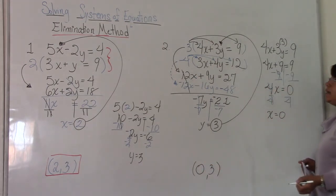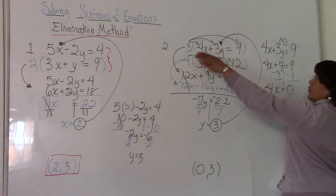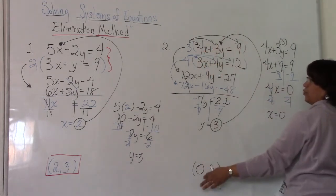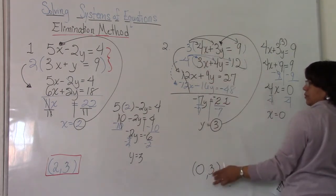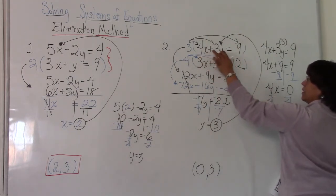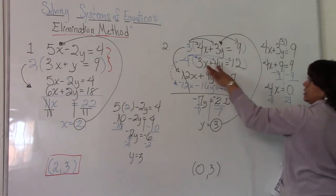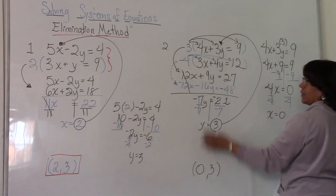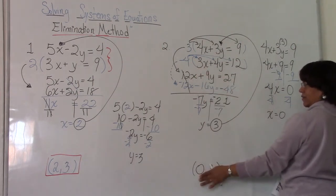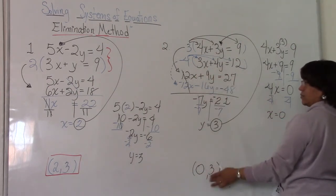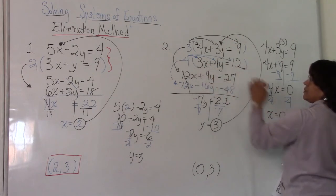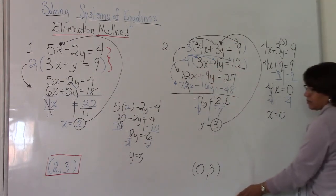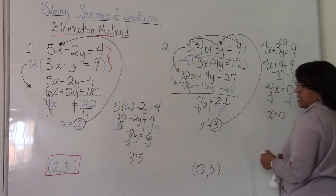Remember how I like to check it out. So the first original equation is 4x plus 3y equals 9. 4 times 0 is 0. 3 times 3 is 9. 0 plus 9 is 9. So that checks. Now we use the second equation, 3x. Well, x is 0. 3 times 0 is 0, and 4 times 3 is 12. 0 plus 12 is 12. So it's correct. So these two lines will cross at the ordered pair 0, 3.